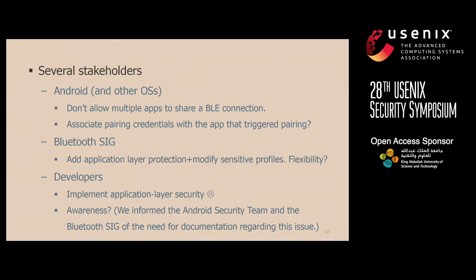Just based on the data access scenarios I've shown, it might seem that Android needs to be the one to make changes — for example, not allowing multiple applications to share a connection, and perhaps associating pairing credentials with the application that originally triggered the pairing. However, pairing and the fact that it happens between the lower layers of the BLE stack is something defined within the Bluetooth specification itself. So perhaps the specification needs to be modified or added to in order to incorporate additional protection mechanisms that extend all the way up to the application layer.